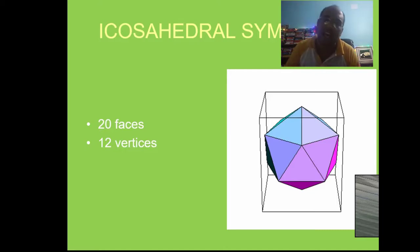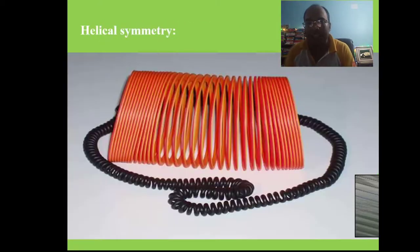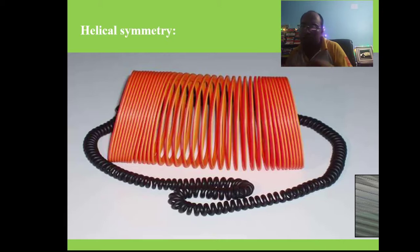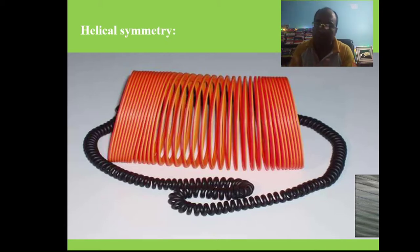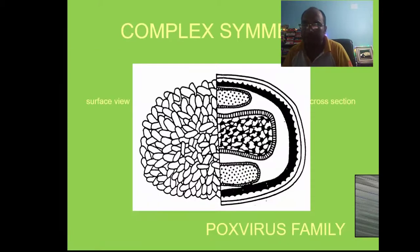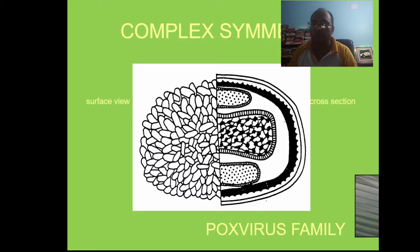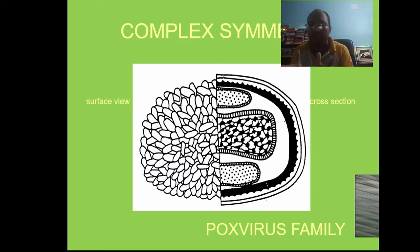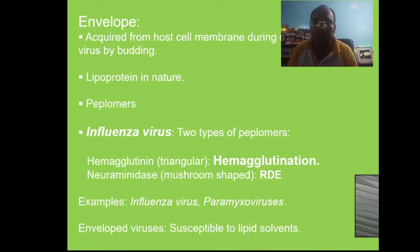Icosahedral symmetry contains 20 faces and 12 vertices. You can see the helical symmetry, where the symmetry of the virus looks like a telephone wire. The complex symmetry is seen in pox virus — the biggest virus — which is 300 nanometers in diameter.